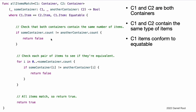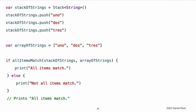The allItemsMatch function starts by checking that both containers contain the same number of items. If they contain a different number of items, there is no way they can match and the function returns false. After making this check, the function iterates over all of the items in someContainer with a for-in loop and the half-open range operator. For each item, the function checks whether the item from someContainer is not equal to the corresponding item in anotherContainer. If the two items are not equal, then the two containers don't match and the function returns false. If the loop finishes without finding a mismatch, the two containers match and the function returns true. Here is how the allItemsMatch function looks in action. The example creates a stack instance to store string values and pushes three strings onto the stack. The example also creates an array instance initialized with an array literal containing the same three strings as the stack. Even though the stack and the array are of a different type, they both conform to the container protocol and both contain the same types of values. You can therefore call the allItemsMatch function with these two containers as its arguments, and it correctly reports that all of the items in the two containers match.